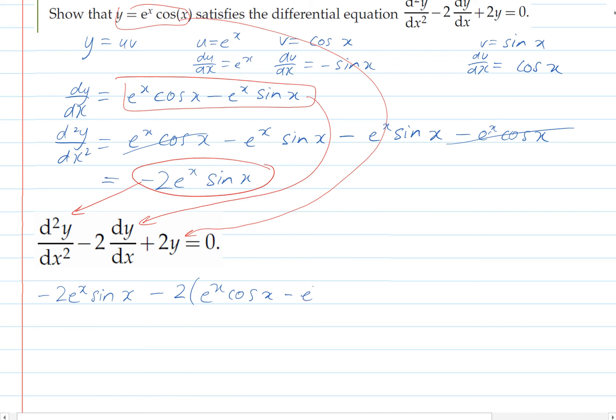So we'll have negative 2 e to the x sin x minus 2 e to the x cos x minus e to the x sin x plus 2 e to the x cos x. And because our differential equation equals 0, we just need to show that this will simplify down to 0. And so we'll start by expanding out our brackets.